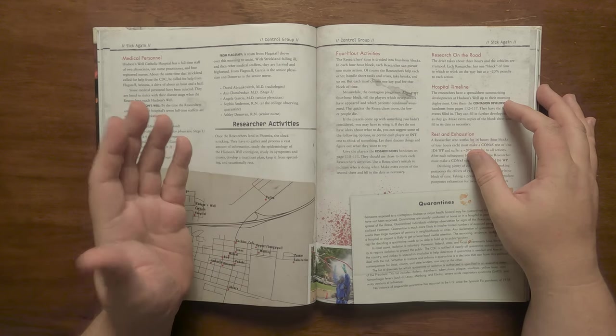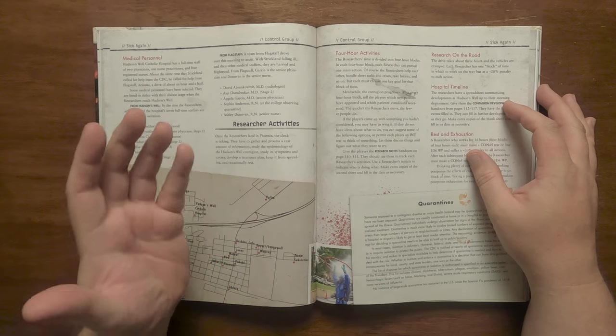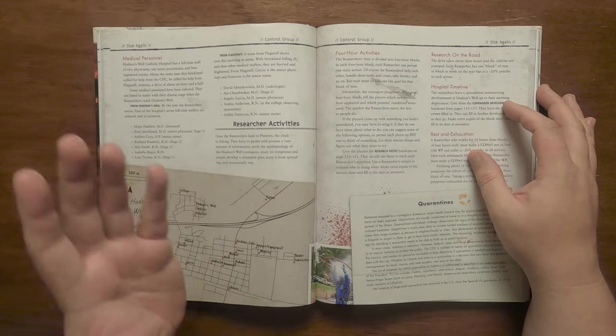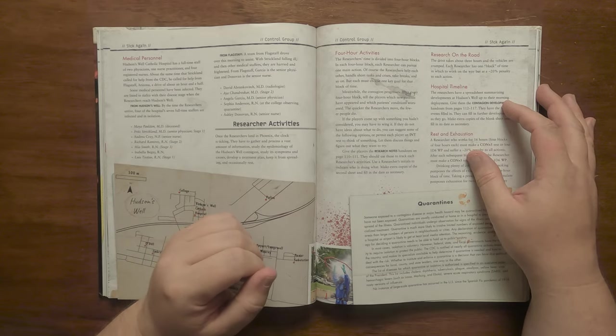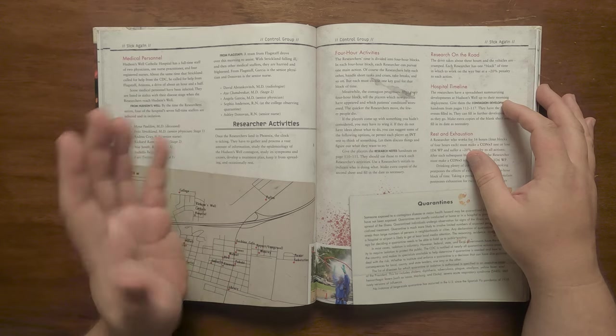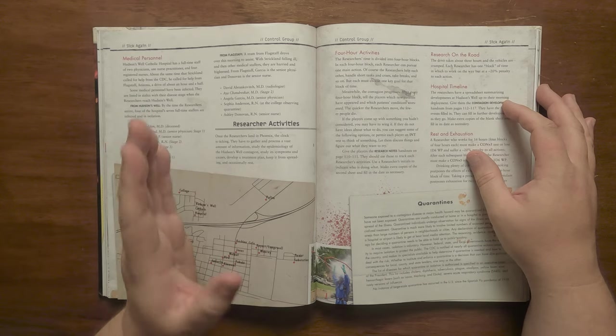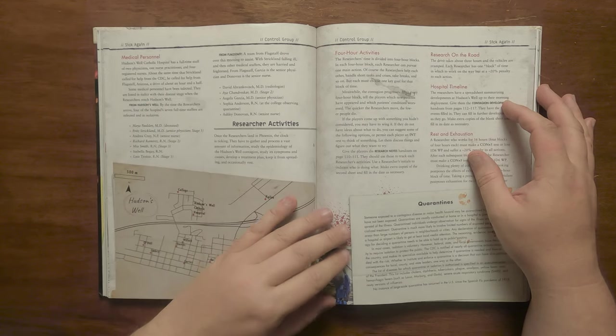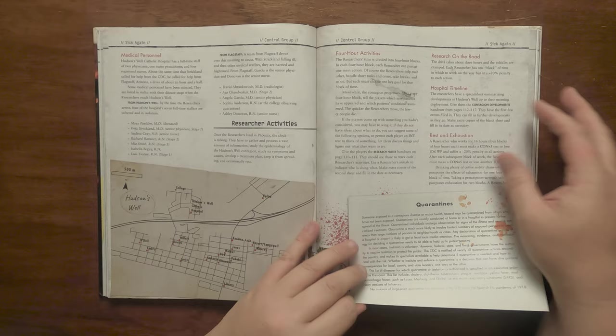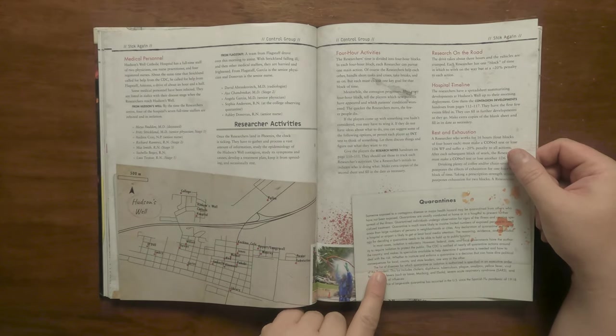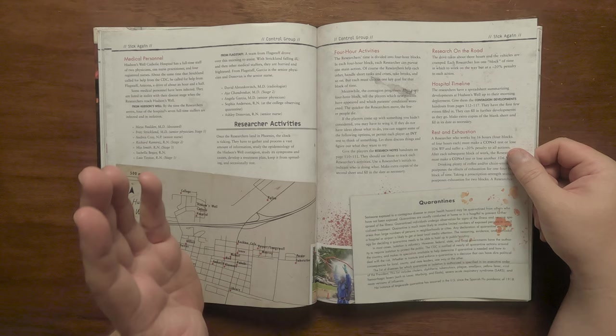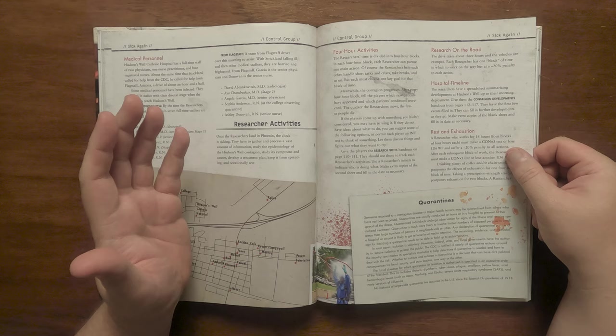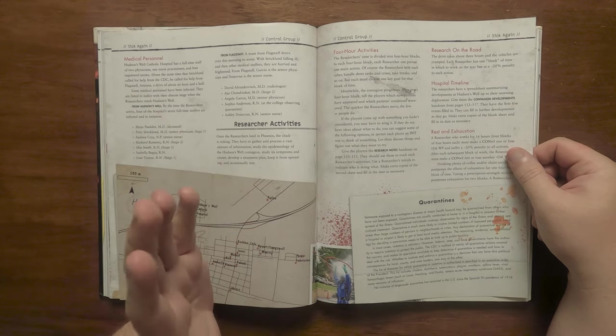As these pursuits are happening, the disease is spreading, new patients are appearing and others are getting worse. Obviously time is of the essence here. They can of course conduct research on their way to Hudson's Well with a penalty. There's a spreadsheet which I'll show you later on which has the timeline of the hospital which is to be given to the players which I will talk about in a bit. It gives some rules for rest and exhaustion and then we have a box out on quarantines and how they're normally managed by the CDC where it discusses the last large-scale quarantine being the Spanish flu pandemic of 1918. It also makes the point that each time two or more adults die or one child the researchers can lose sand from helplessness.